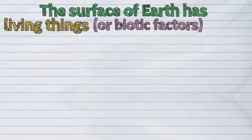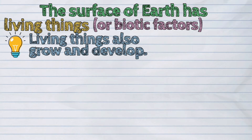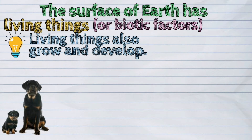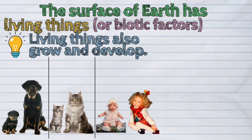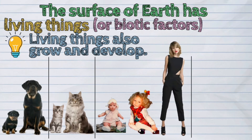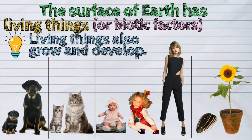Living things also grow and develop. Puppies grow to become dogs. Kittens become cats. Babies develop into children and then into adults. Plants grow too — seedlings grow into plants.